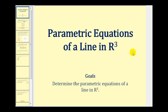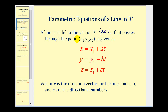Welcome to a lesson on parametric equations of a line in R3. A line that is parallel to vector v with components a, b, c that passes through the point x1, y1, z1 is given as x equals x1 plus At, y equals y1 plus Bt, and z equals z1 plus Ct. The components of the directional vector a, b, c are the coefficients for t.